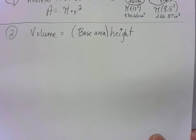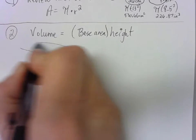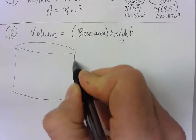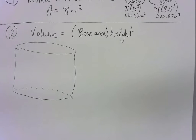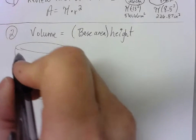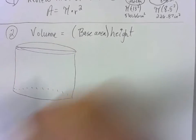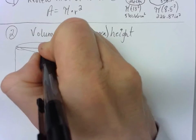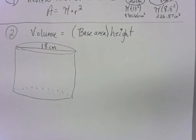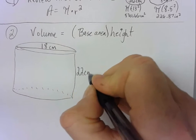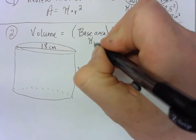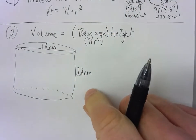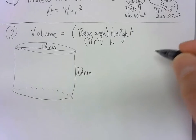Let's do a couple of examples. I'll draw two cylinders — one using the diameter, one using the radius. For the first one, think of a can of beans or corn. Let's say the diameter is 18 centimeters and the height is 22 centimeters. To get the area of the circular base, you do pi times radius squared, then multiply by the height.